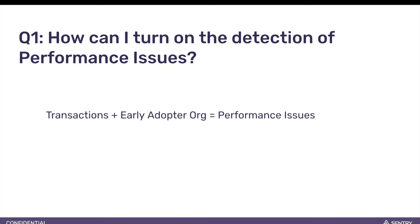You don't really need to do anything. As long as there are transactions that are being sent to Sentry and an organization that sends them is a part of the Early Adopters program, the detection should be enabled. Performance detection is run on incoming indexed transactions at ingest, and no additional step is necessary.